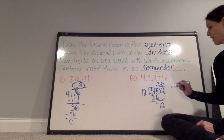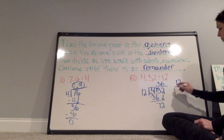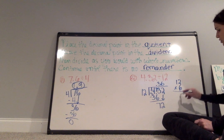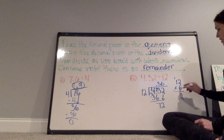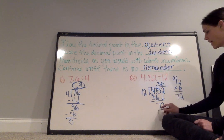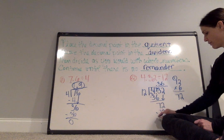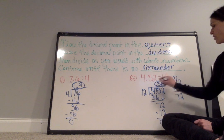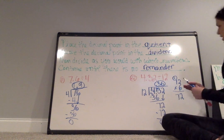72 divided by 12 is 6. So I put 6 in my quotient. If you have to multiply 12 times 6 out to the side, you can do that. 6 times 2 is 12. Carry the 1. 6 times 1 is 6 plus 1 is 7. So I have 72, a remainder of 0. So my quotient is 0.36.